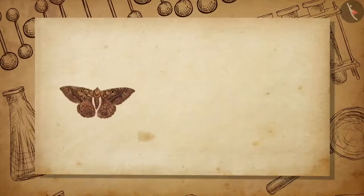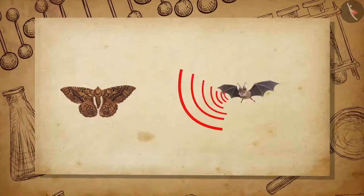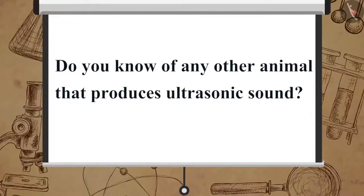Moths have very sensitive hearing equipment, due to which they can hear the higher frequency noise of the bat when it is nearby and take measures to avoid it. Do you know of any other animal that produces ultrasonic sound?